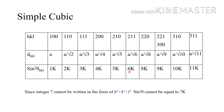After 6K, the value 7K is missing, since the integer 7 cannot be written in the form h² + k² + l². Therefore sin² theta cannot equal 7K. For a simple cubic crystal, all planes are present except those corresponding to 7K.